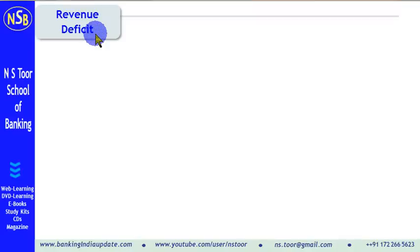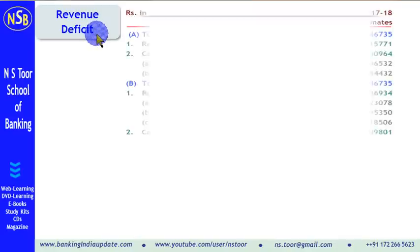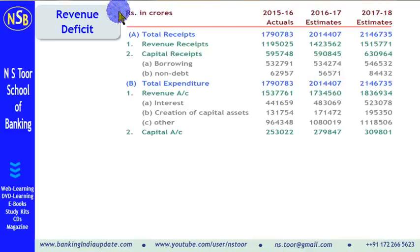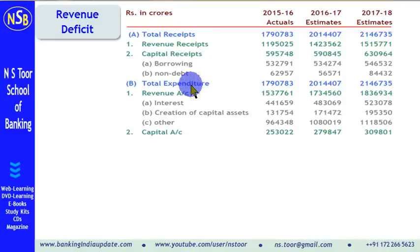This discussion will be based on an example. We have information taken from India Budget 2017-18. This amount is expressed in crores of rupees. We have receipts here and we have expenditure here — receipts of the central government and expenditure of the central government.